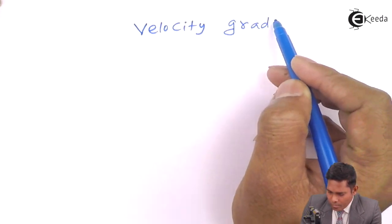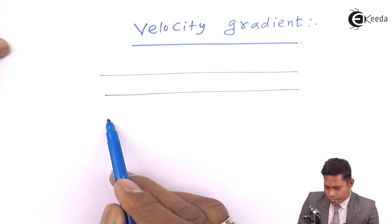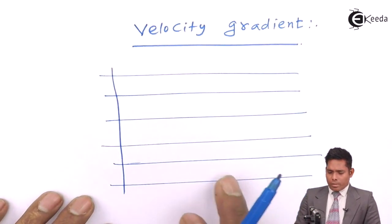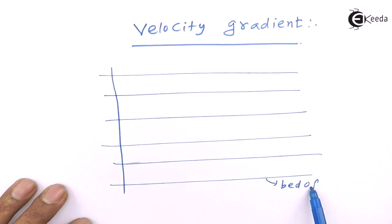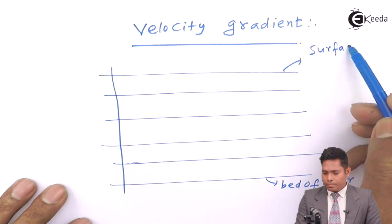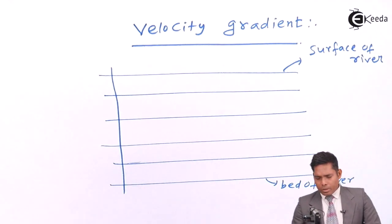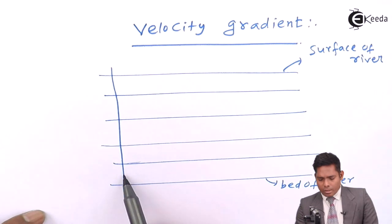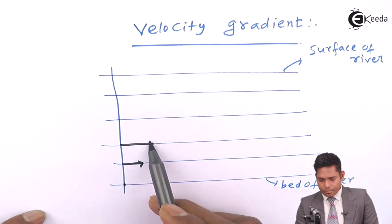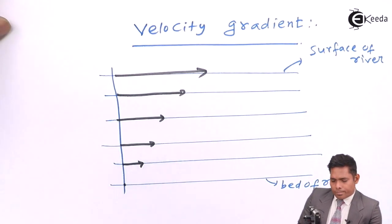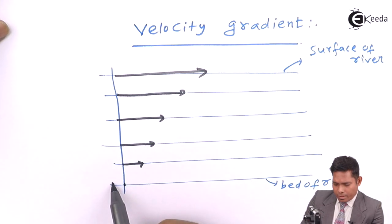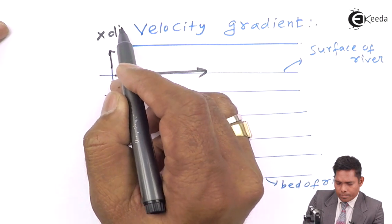The velocity gradient is the change in velocity with respect to the change in displacement. This is a river bed — water is flowing in this direction. This is the bed of the river, and this is the surface. As you move from bed to the surface, from bottom to top, the velocity gradually increases, being zero at the bottom and gradually increasing. I consider a layer at a distance — this is my x direction.